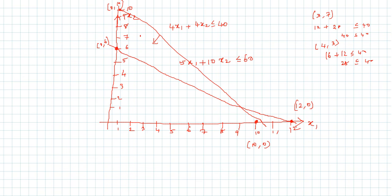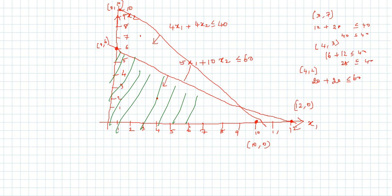We also verify the first line using point (4, 2): 5(4) + 10(2) = 20 + 20 = 40 ≤ 60, which is satisfied, confirming the feasible region is below that line as well. The intersection of the two feasible regions forms the overall feasible region, shown as the shaded area on the graph.